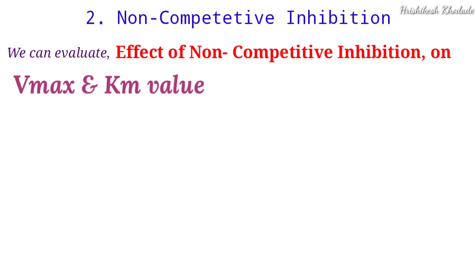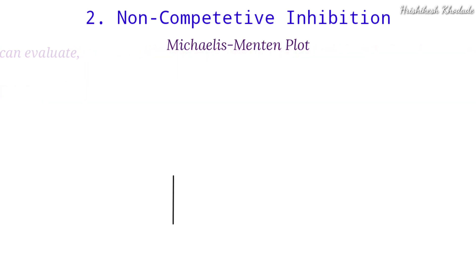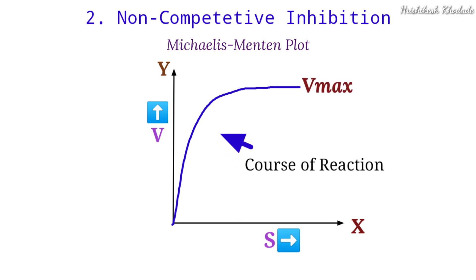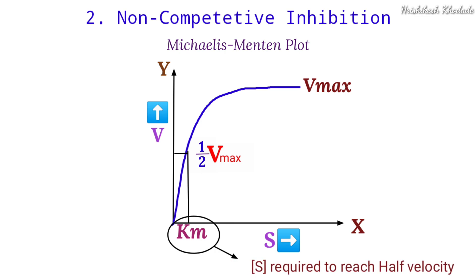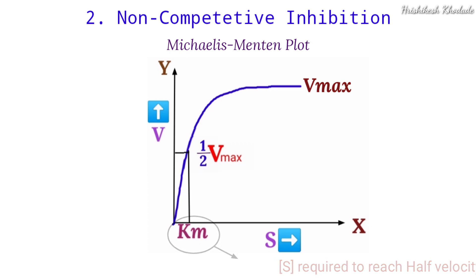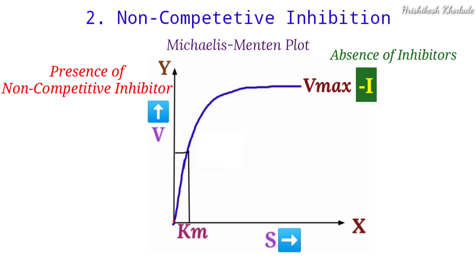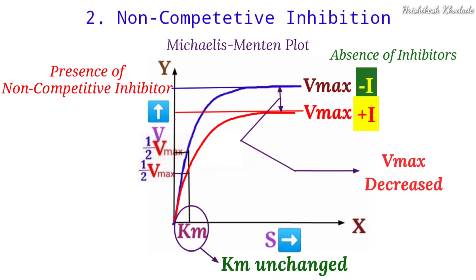Let's check the effect of non-competitive inhibition on Vmax and Km using the Michaelis-Menten plot. The x and y axes represent substrate concentration and velocity of reaction. The half-velocity point (Vmax/2) is on the y-axis, and the corresponding Km value is on the x-axis. In non-competitive inhibition, the Km value remains the same, but the overall Vmax of the reaction is decreased.